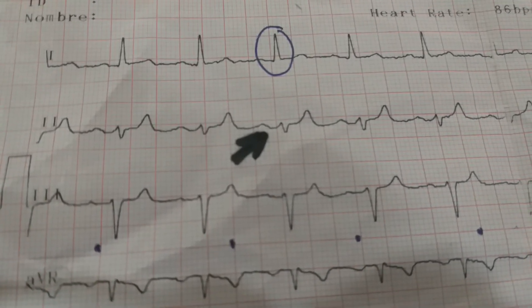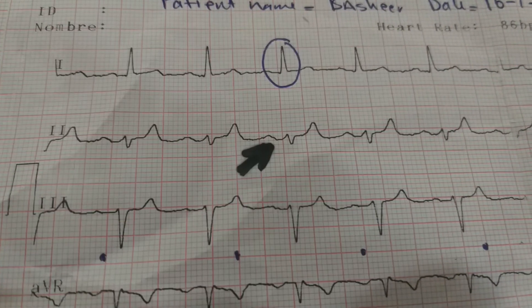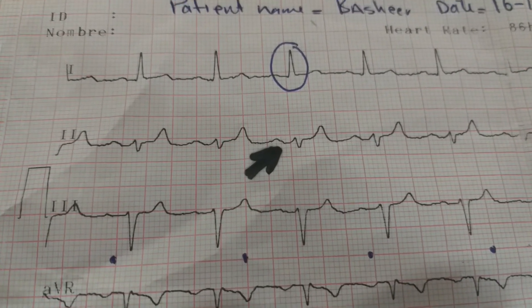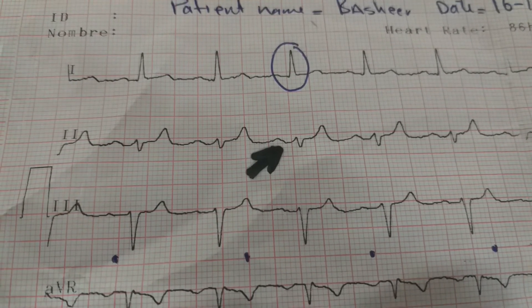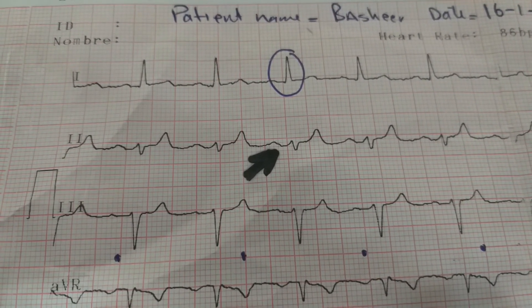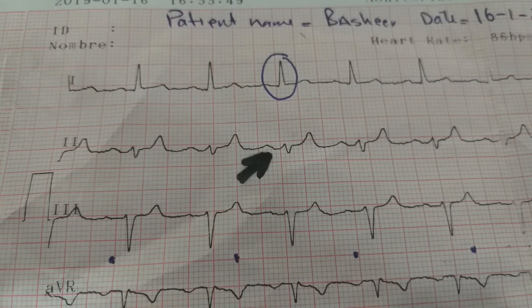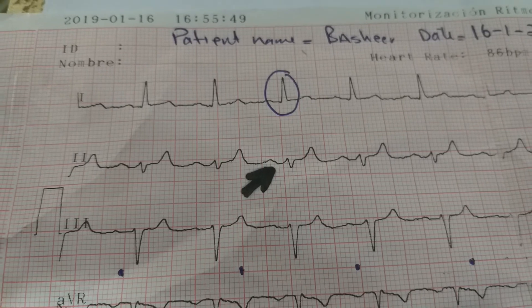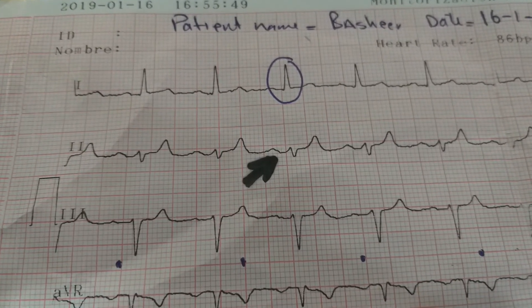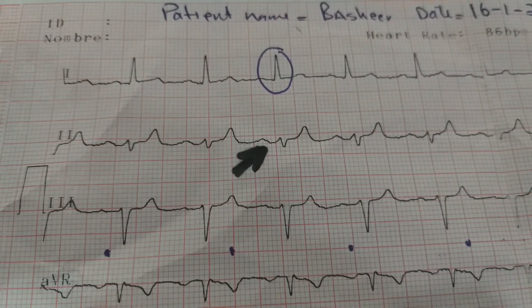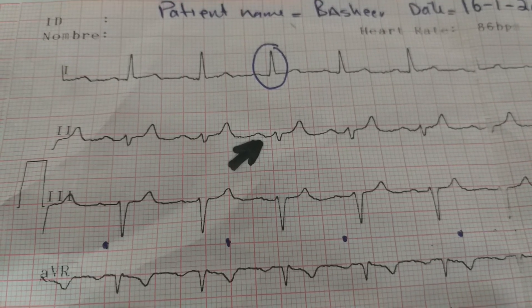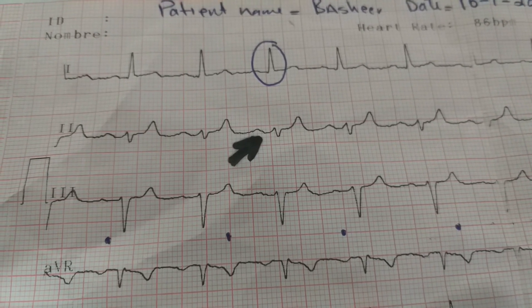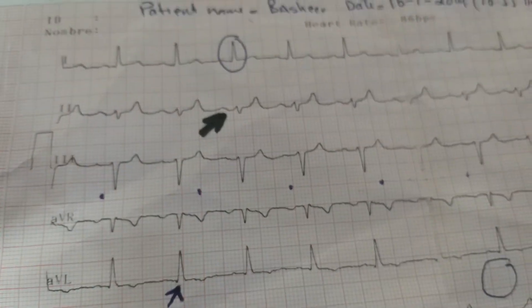Looking at the P wave in lead 2 once more, the morphology is very smooth — the ascending and descending contours are equal. But if left atrial hypertrophy is present, the P wave morphology changes: the ascending segment is normal, but before descending there would be another notch added, giving it the name P mitrale, because it happens most often in mitral stenosis, which causes left atrial hypertrophy.